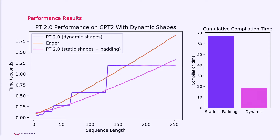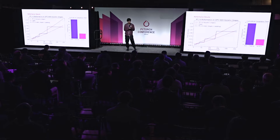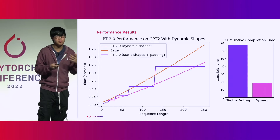One way to deal with varying shapes if you only support a static shape compiler is to pad to the nearest power of two and pass that through your program. You can see what the performance looks like with the purple line — you get jumps where you need to pad up to the nearest power of two. Although this improves performance in many cases, we're still leaving performance on the table due to the extra overhead. On the other hand, with PyTorch 2.0 dynamic shapes — the pink line — we not only generally outperform both static shapes plus padding and eager mode by a pretty significant margin, but we also have a smooth performance curve as we increase the sequence length.